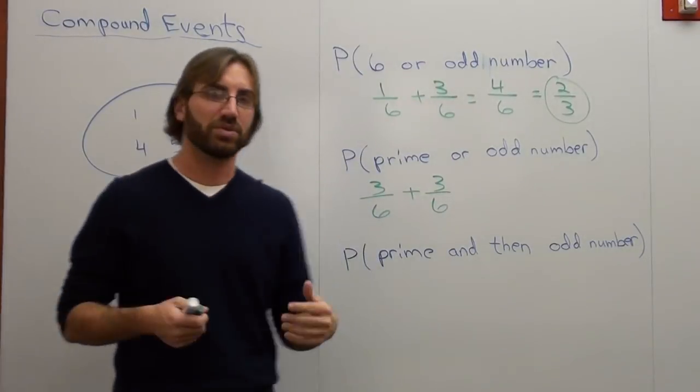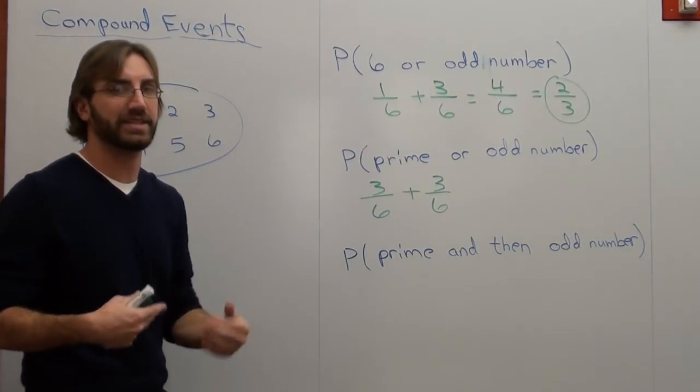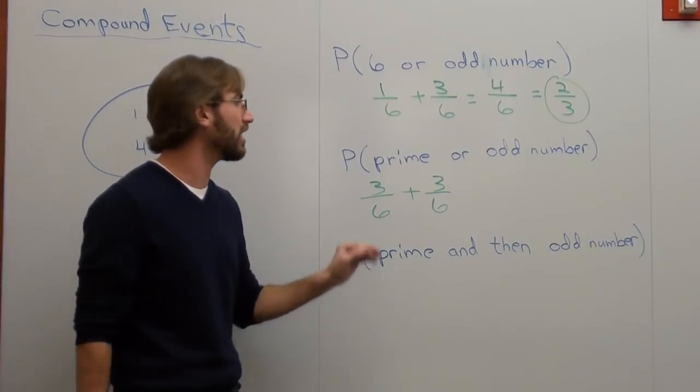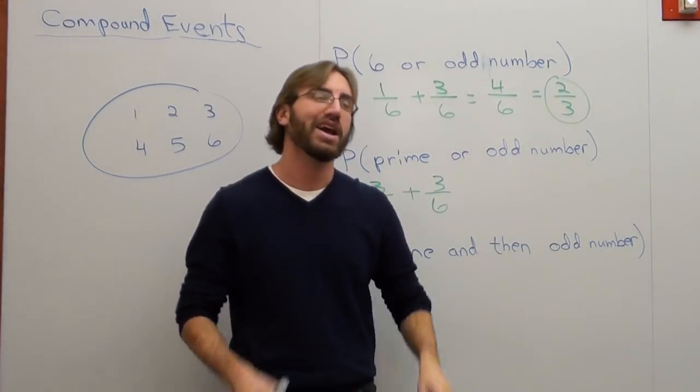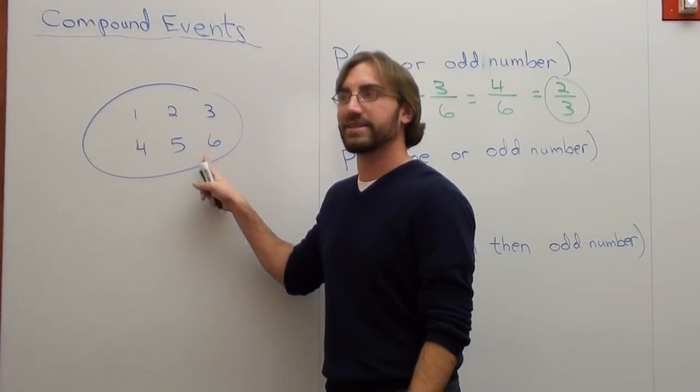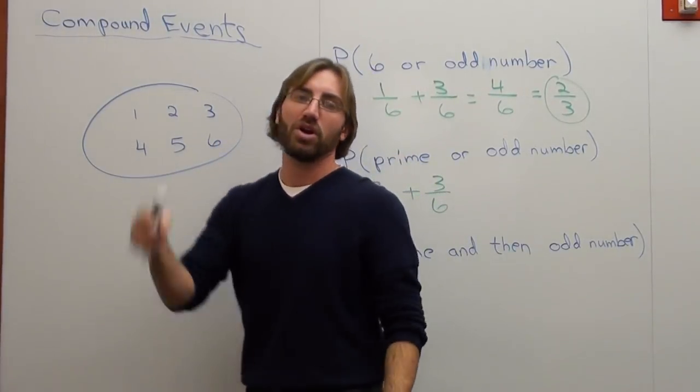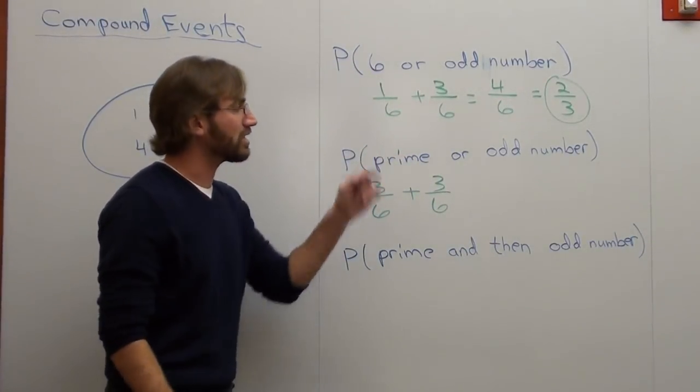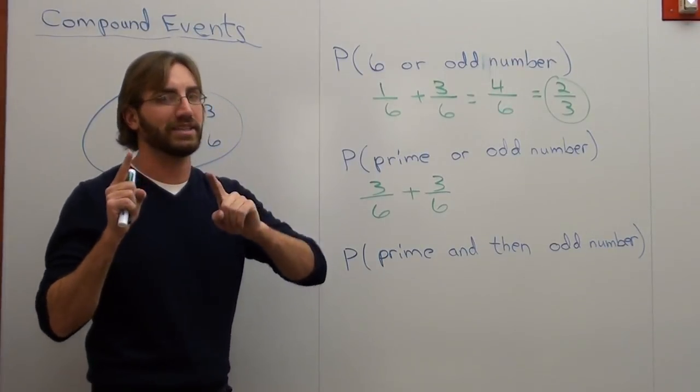Because basically what 3/6 plus 3/6 is, is 6/6 or 1. Your probability is 100% that you're going to roll a prime number or an odd number. Garbage. Because 4 and 6 are neither prime nor odd. So this doesn't work out. Well, actually it does.